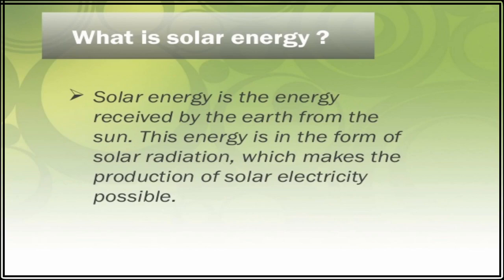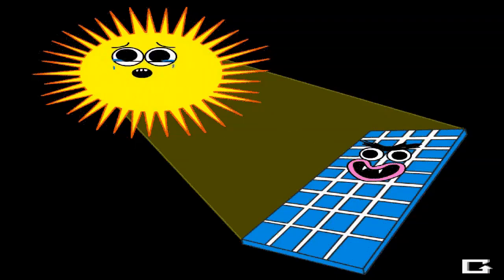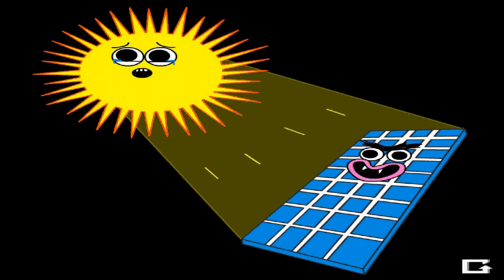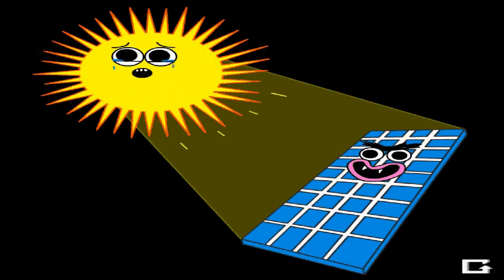Before moving to the next source, look at this animation — it clearly shows the sun throwing its light and heat energy directly onto solar panels, which store that energy to make electricity.